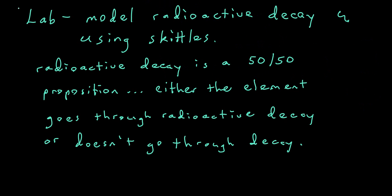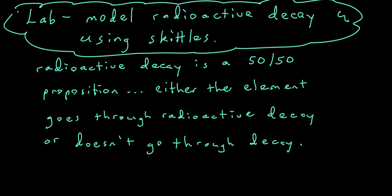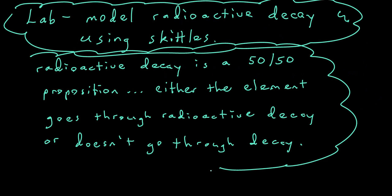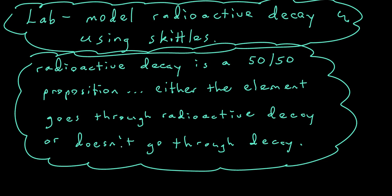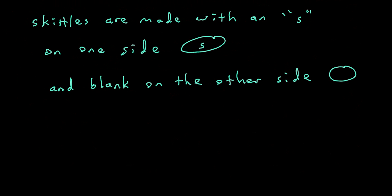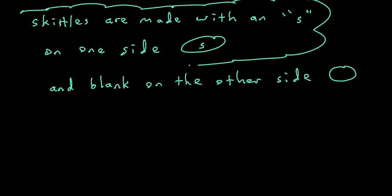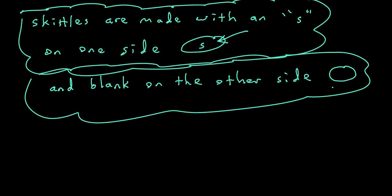Now let's look at the lab we'll be doing. We're going to model radioactive decay using Skittles. Radioactive decay is a 50-50 proposition — either the element goes through radioactive decay or it doesn't. To represent this, we use Skittles. If you look closely at a Skittle, one side has an S printed on it, while the opposite side is completely blank — no S on that side.